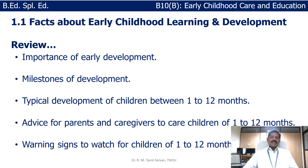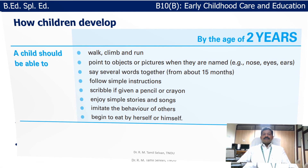In the last class we learned the importance of early childhood development, the important milestones of development, typical development of children between 1 to 12 months, advice for parents and caregivers to take care of children of 1 to 12 months, and the warning signs to watch for children of 1 to 12 months. With this background we will go to the next topic, covering the age group of children between 2 and 8 years.